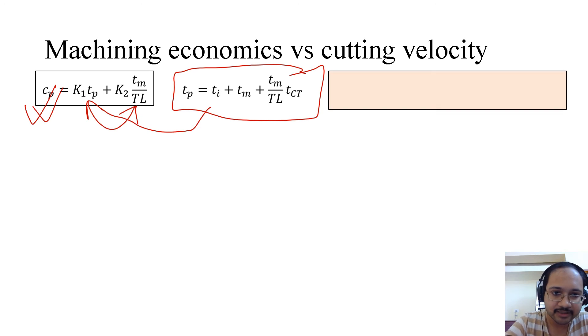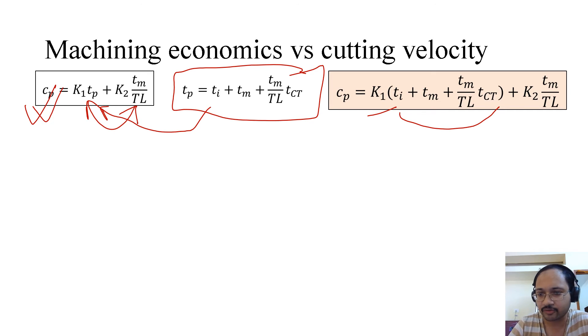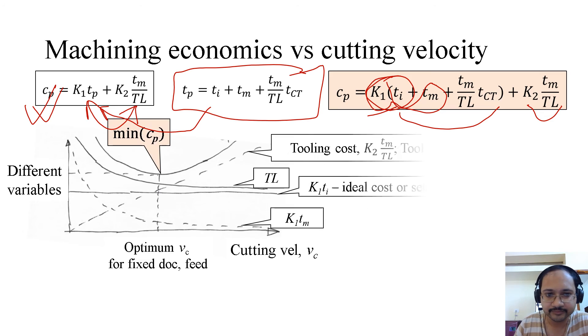So if we feed this in tp, what we get is this. So K1 times now tp is broken down. So if you look carefully into this expression, it has actually three components in terms of unit. One is K1 ti, another is K1 times tm, and the last part is K1 tm over tl times tct plus K2 tm over tl. That means, if we try to find out what is the minimum cost per piece, we will need to understand very carefully how these terms vary.